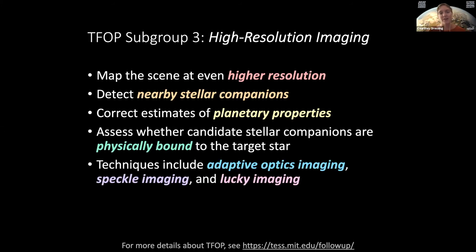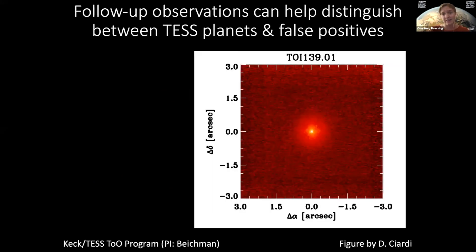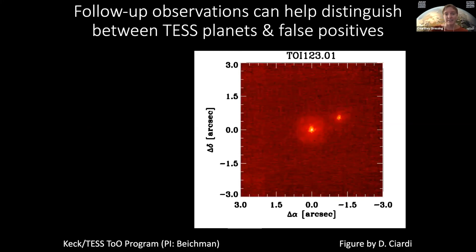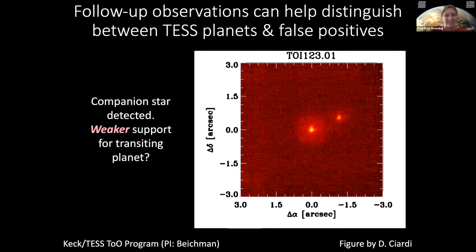You can use a variety of techniques for this, like adaptive optics imaging, speckle imaging, and lucky imaging. Here's an example of what these data look like — this is an AO image of the system TOI 139. Here you see a single star, which provides stronger evidence for a transiting planet. Here's another system — here you see two stars, so you might be suspect and think this means it's not real, but in this case this actually is a confirmed planet. It just tells us that we need to adjust the planet radius estimate to account for the light of the nearby star.